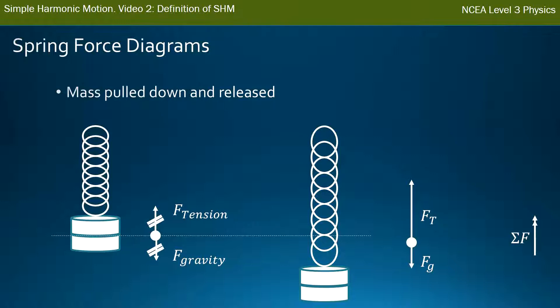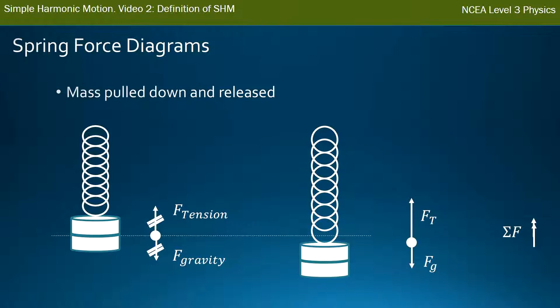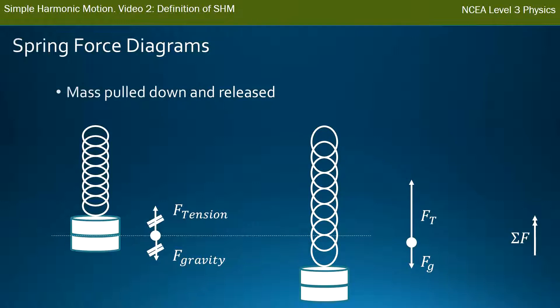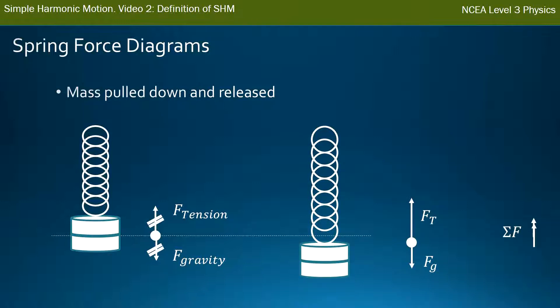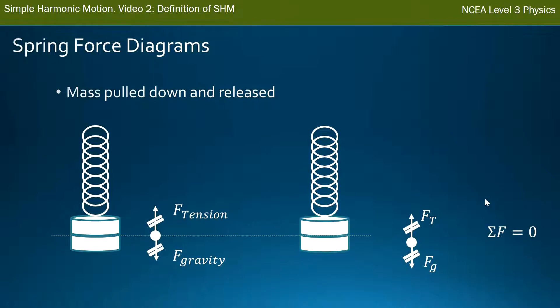A split second later the spring has moved upwards. It's moved up from its bottom point, still moving, and now the tension gets smaller because the spring is not as stretched out — so the total force is smaller than before. It continues moving and passes through the equilibrium point. This force diagram is the same as when it wasn't moving: tension equals gravity, and the total force is zero.